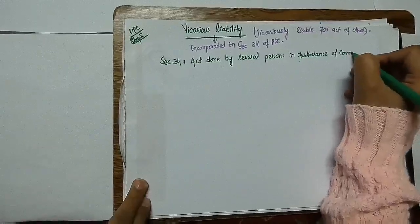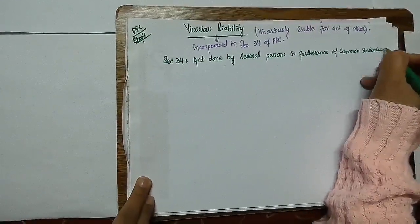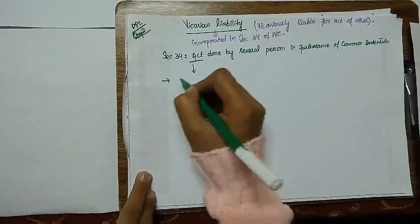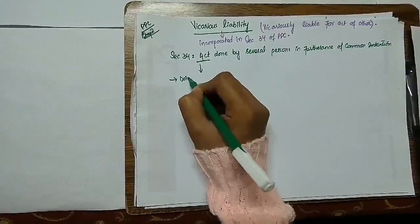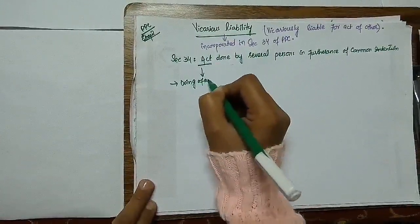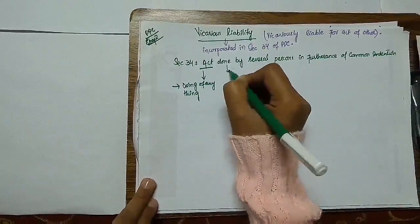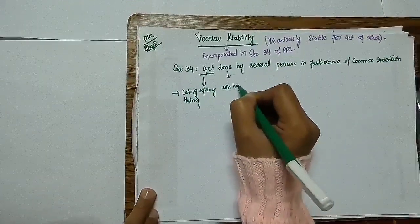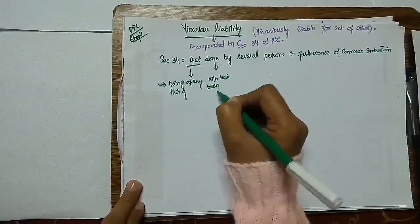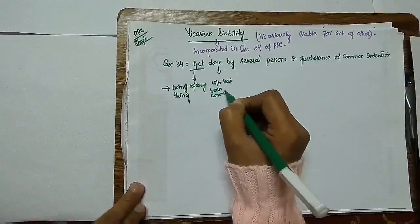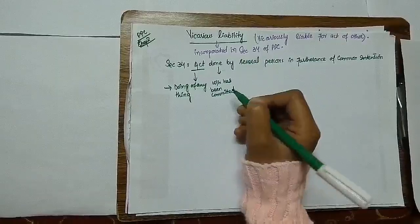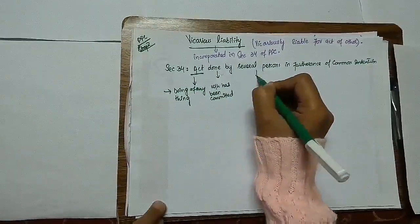When there are several persons and they are acting in the same manner they are committing an act in furtherance of common intention. Act generally means doing of anything, and what does the word done mean? Which has been committed, any act which has been done.